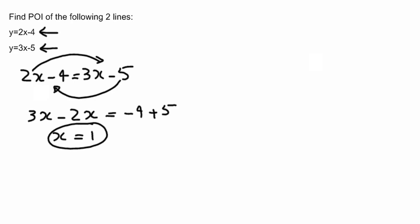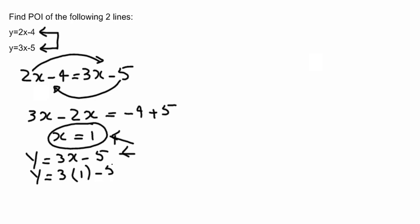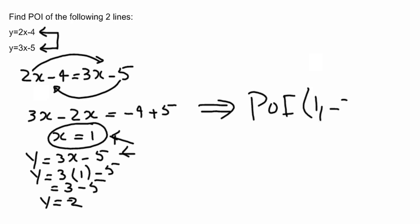To find the y-coordinate of the POI, I'll pick one of the two equations. Let's pick the second equation: y equals 3x minus 5. I know the x of the POI is 1, so substituting x equals 1 gives y equals 3 times 1 minus 5, which is 3 minus 5, so y equals negative 2. Therefore, the POI is (1, negative 2).